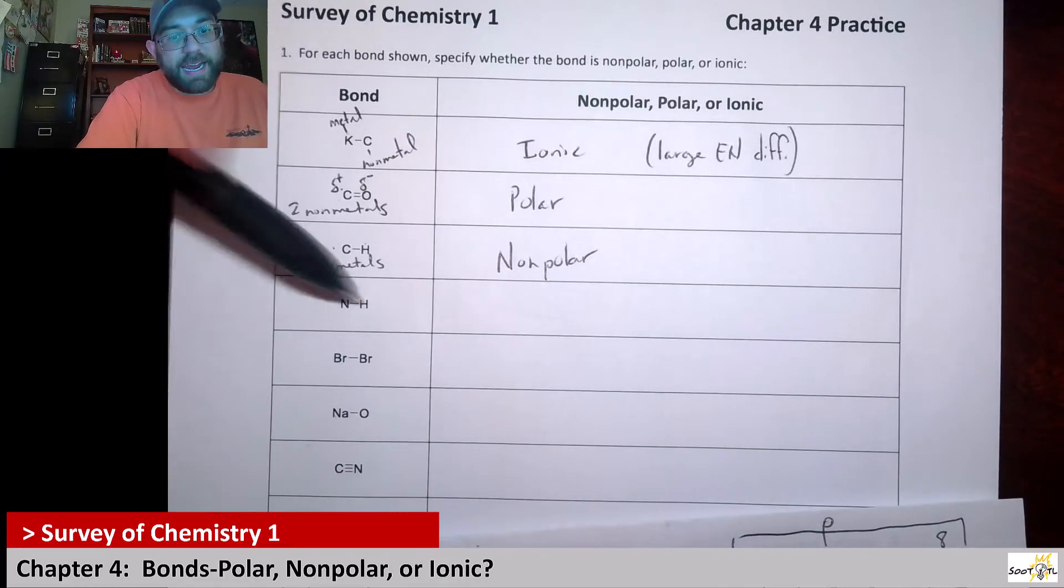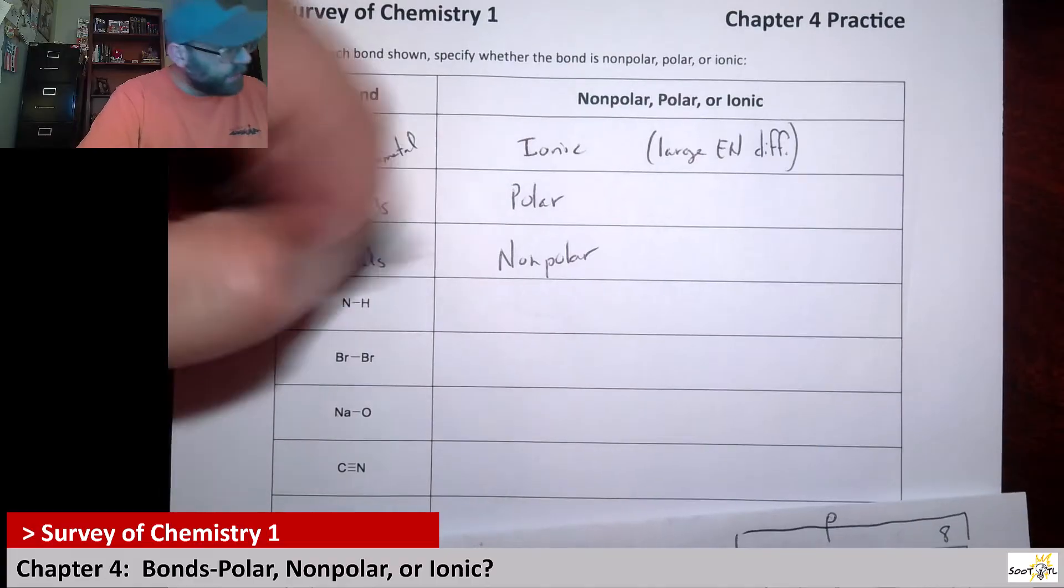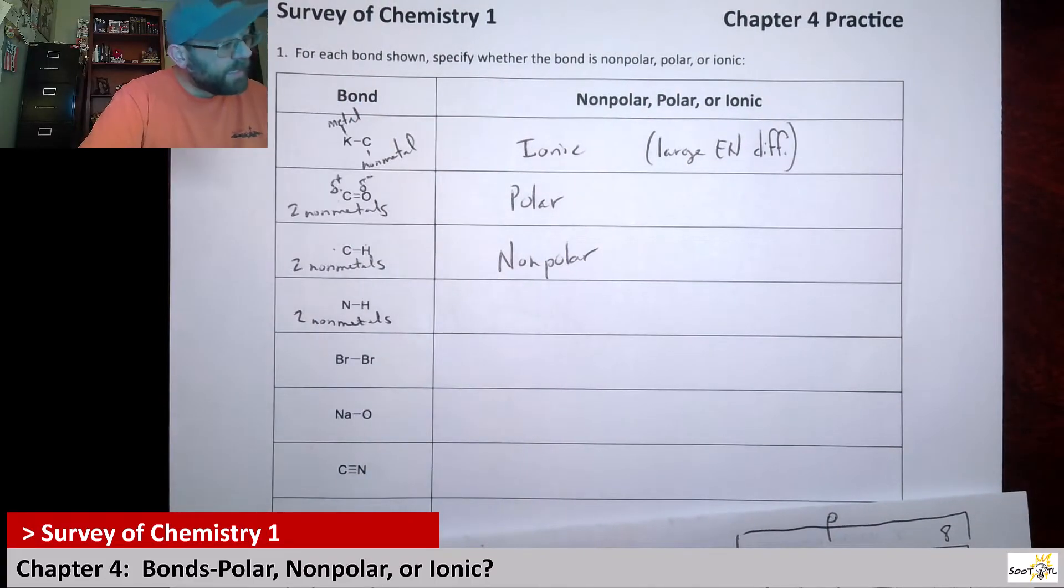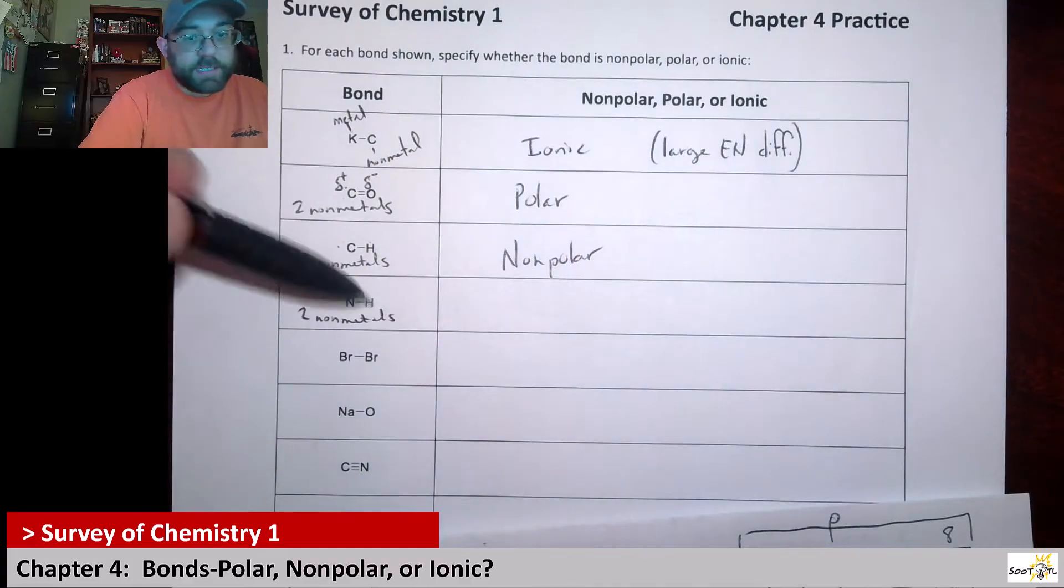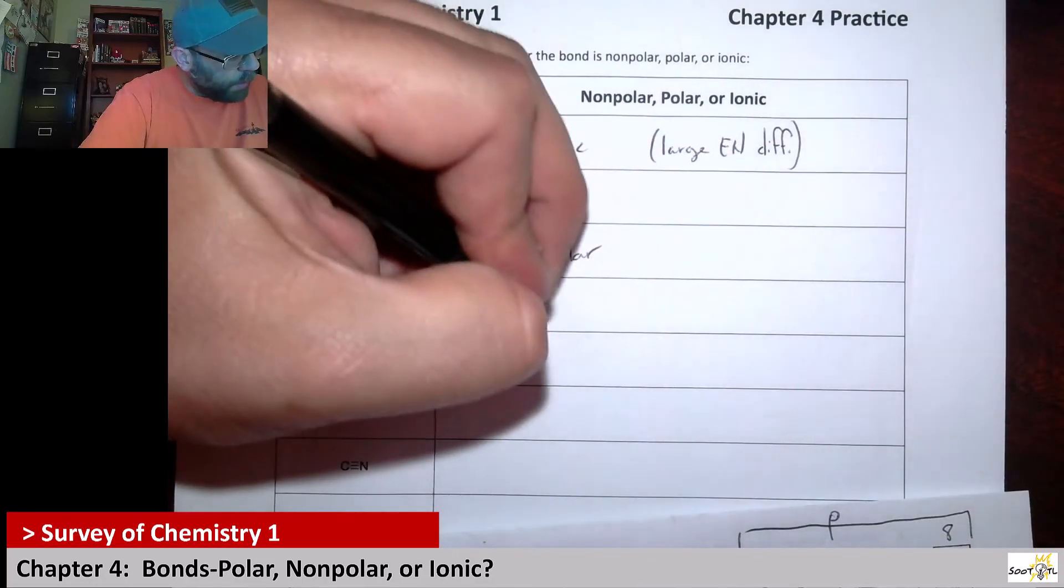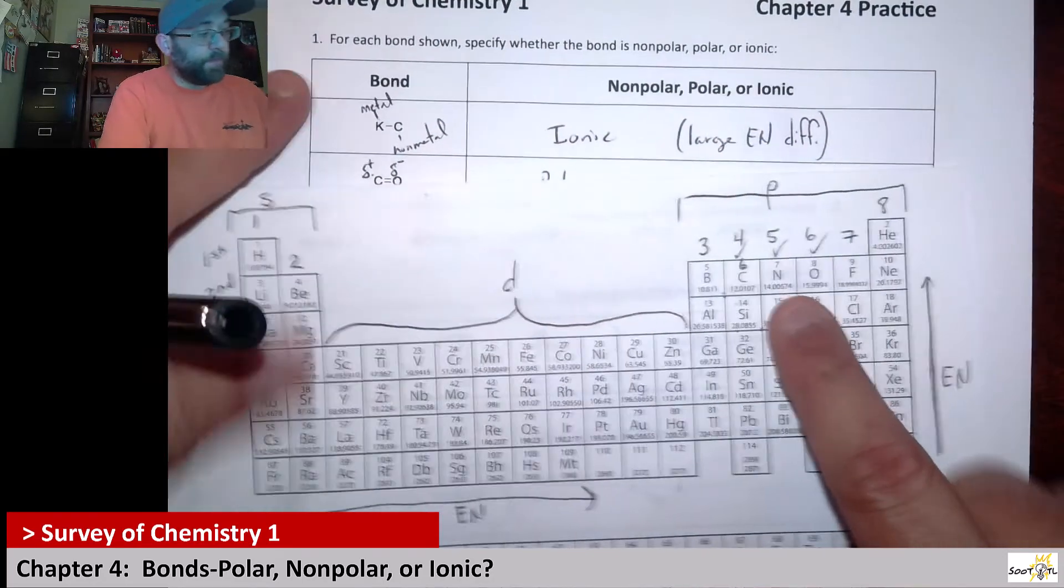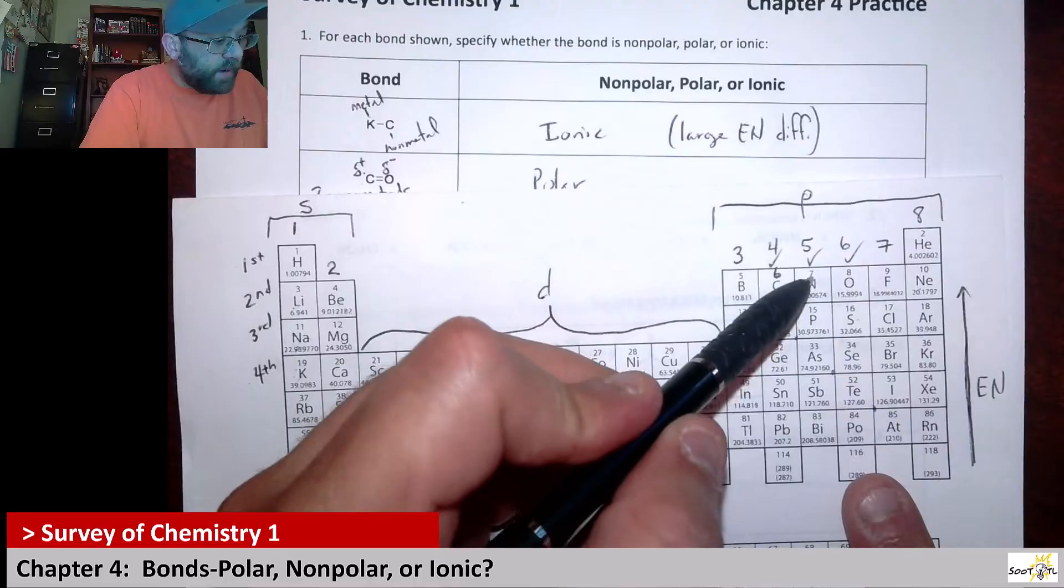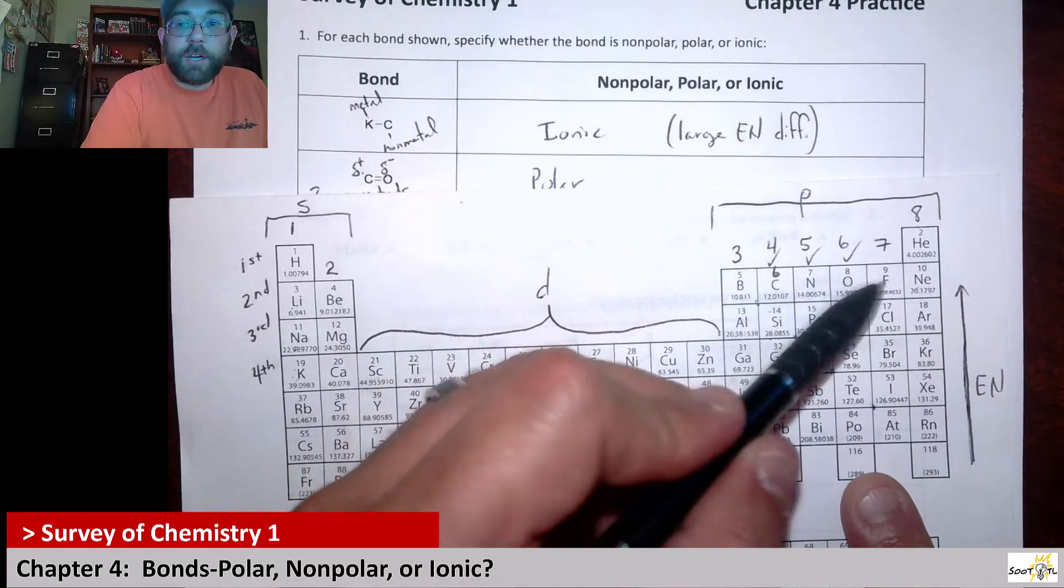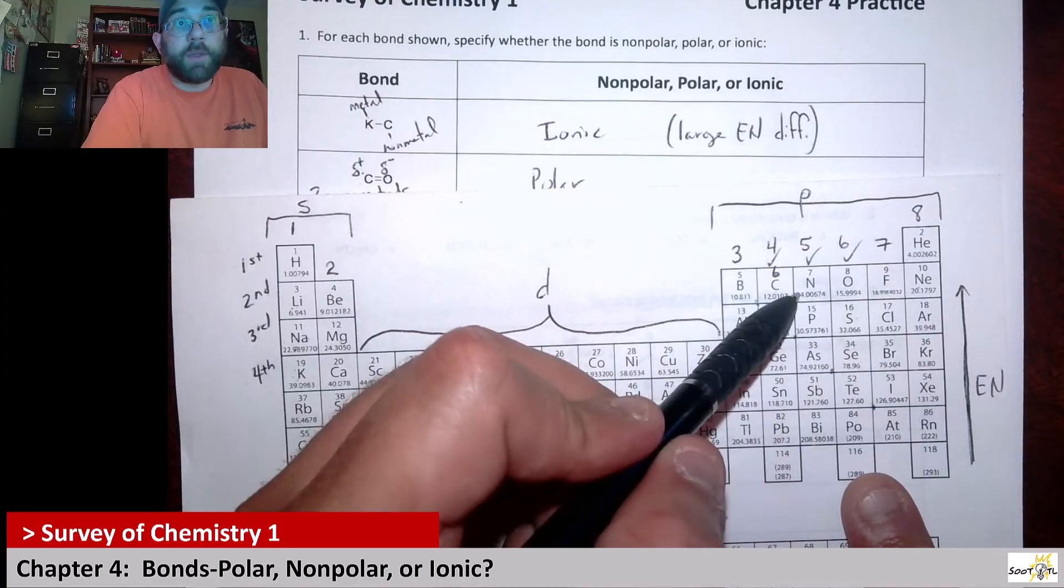Next up we have an N-H bond. So yet again, two nonmetals. But here the electronegativity difference is strong enough that this would be considered a polar bond. Pretty much anything here over, so nitrogen, oxygen, fluorine, those are going to give us polar bonds with hydrogen.